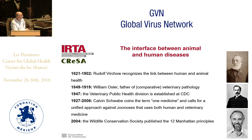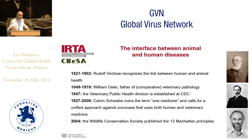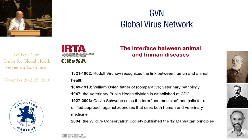The interface between animal and human diseases has interested researchers over time, but especially in the last two centuries. It was Rudolf Virchow who first recognized the link between human and animal health. Afterwards, Dr. Willie Mosler, a medical doctor considered the father of comparative pathology, further developed this field. Back in the late 1940s, the CDC in Atlanta established the division of veterinary public health. Then Dr. Calvin Schwab coined for the first time the terminology 'one medicine,' which is the origin of the 'one health' concept we use currently, as he claimed a unified approach against zoonotic diseases.